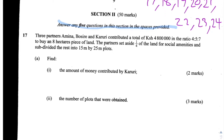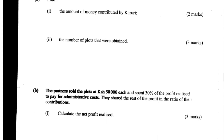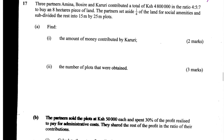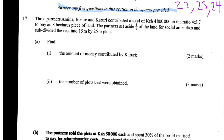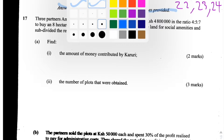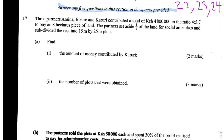We have sections A and B of this question, and each of sections A and B are worth 5 marks. Let's start with section A, part 1, which says: find the amount of money contributed by Karuri. A good thing to do would be to underline the parts of the information that are relevant to this first part of the question.